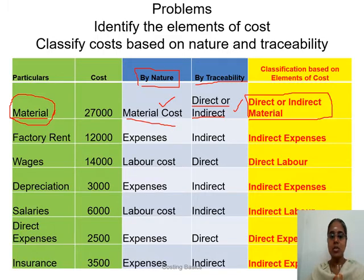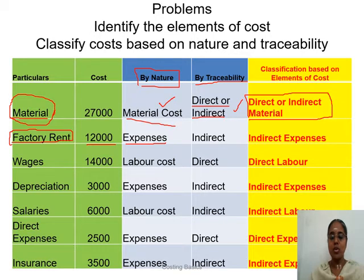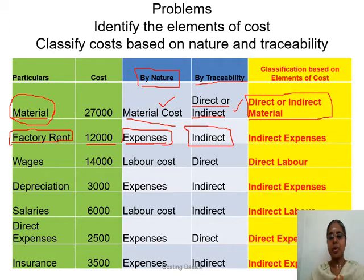The second item is factory rent, 12,000. Factory rent is not a material — it is not a physical substance you are paying for — and it is not for any human effort. So it is an expense. It cannot be directly related to any product or process, so it is an indirect cost. The answer is indirect expense.